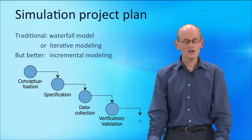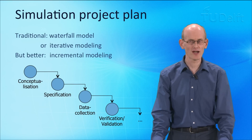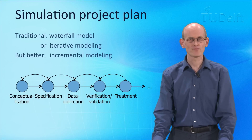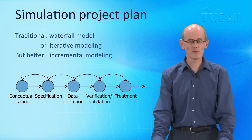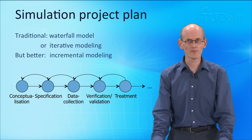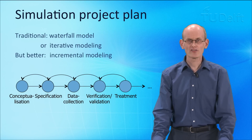Often we use a traditional waterfall model for this, which is also what we see in many textbooks: first conceptualization, then specification, then data collection, then verification, etc. More and more, iterative modeling is becoming normal in discrete event simulation. This means that we build a model, go to specification, go to data collection, find that maybe we need to make some changes, and then go back to one of the earlier phases to adapt the model. However, an incremental model is lately seen as the best way to build discrete event simulation models.